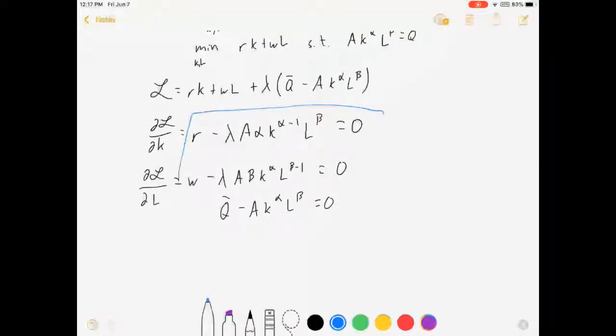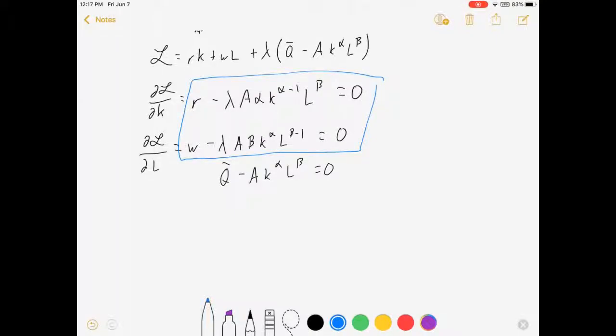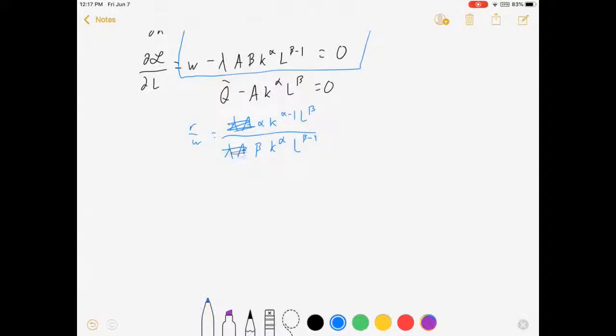Alright, these three equations give us everything we need to know. First thing I want to do is I'm going to combine these two. I'm gonna basically divide them by each other so that R over W is equal to lambda A alpha K to the alpha minus one L to the beta over lambda A beta K to the alpha L to the beta minus one. So what's going to happen here, those terms cancel out which is convenient.